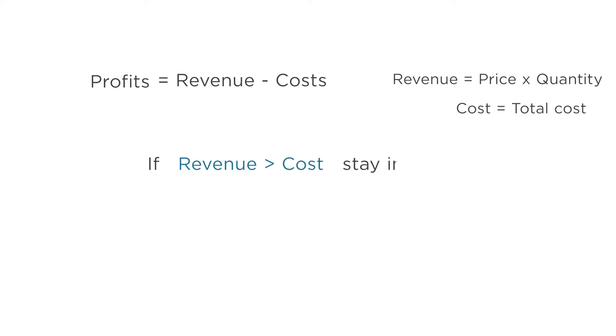What are profits? Revenue minus costs. Revenue is the price of the good times the quantity sold. Cost is simply the total cost to produce that quantity of the good. If revenue is greater than cost, profits are positive so the firm stays in business.